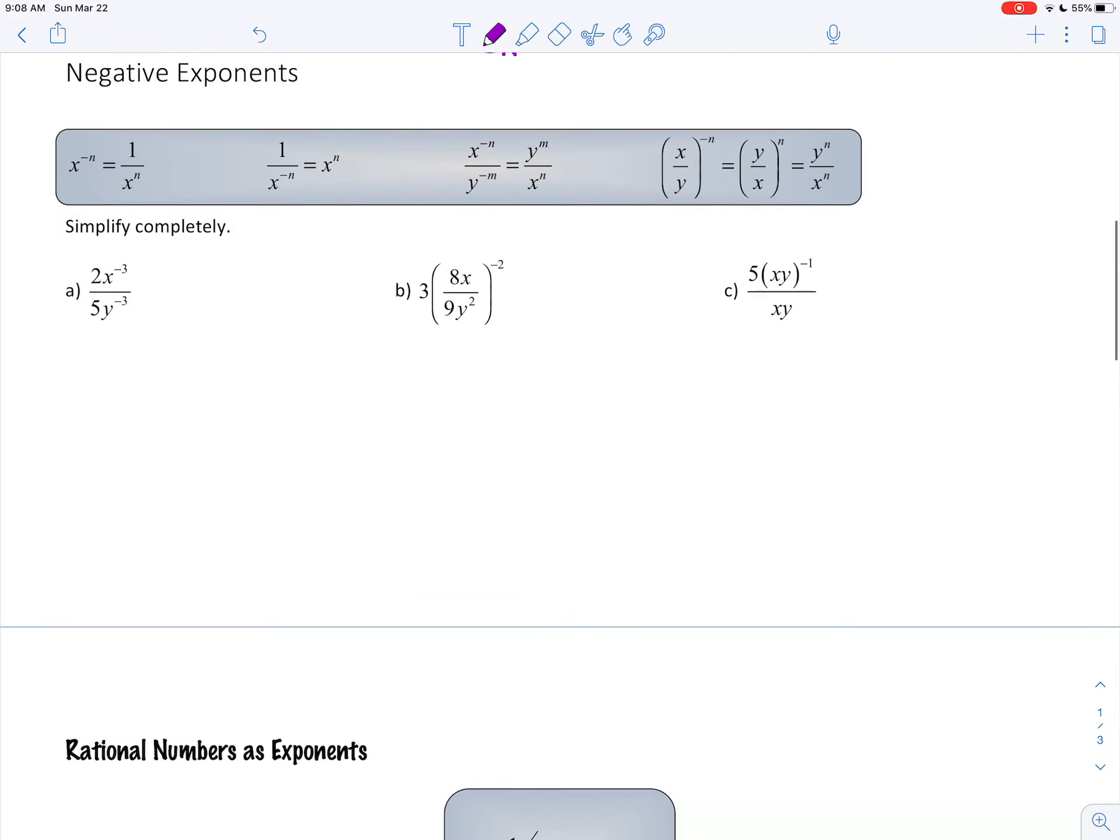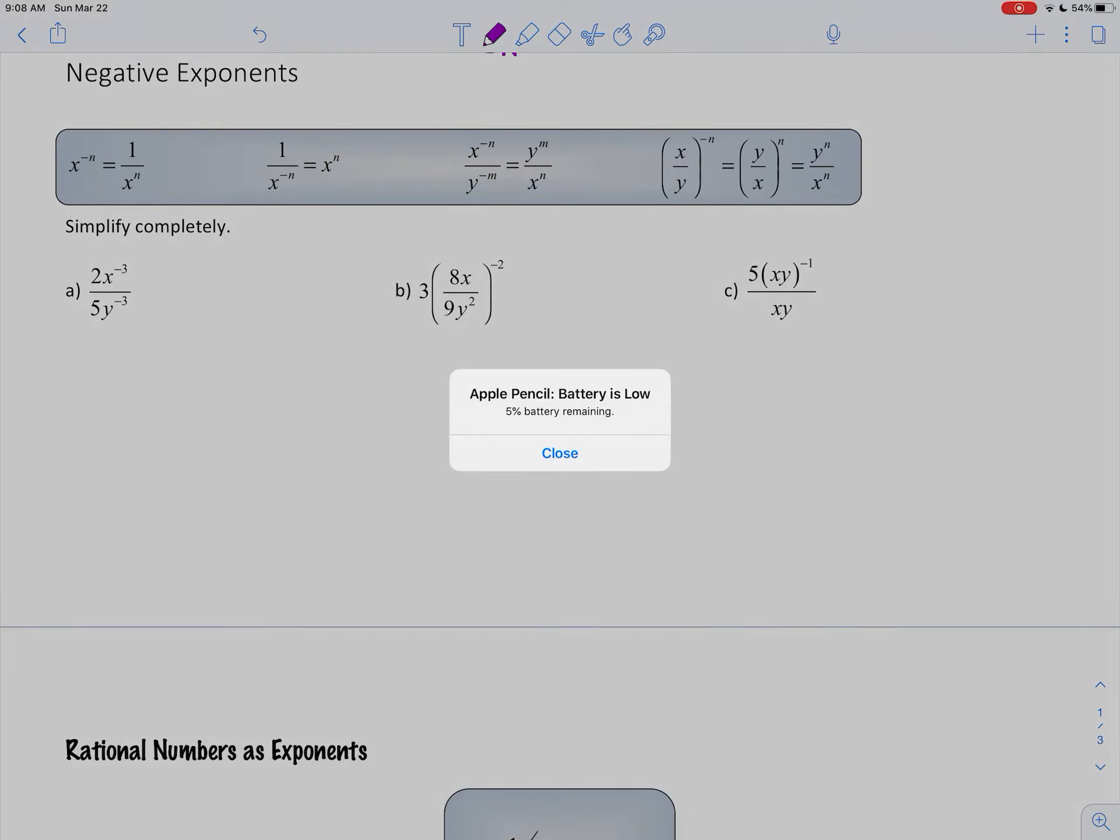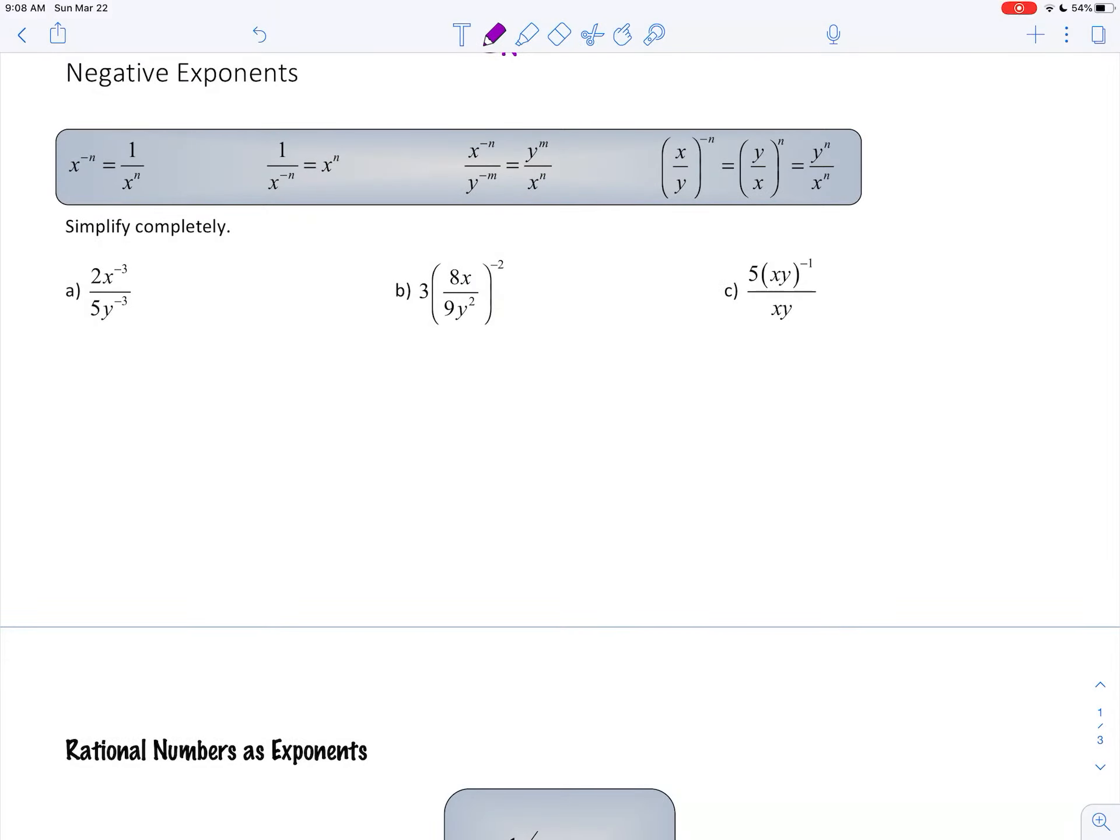Negative exponents is a notation that refers to a reciprocal. Here I have all the different variations of what you could see or what you could be dealing with with negative exponents. So for this first example, to change the negative exponents into positive, we simply change their position. Either move it up or down.